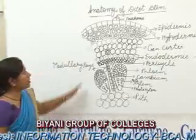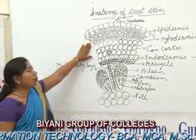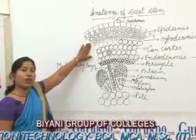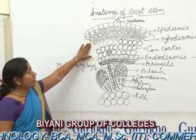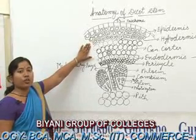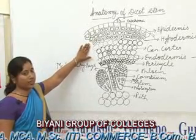Hypodermis is made up of three to four layers of collenchyma cells. It gives mechanical strength to the young stem.